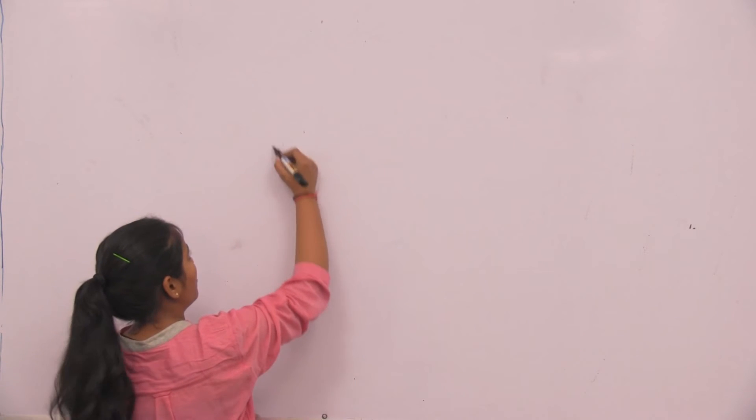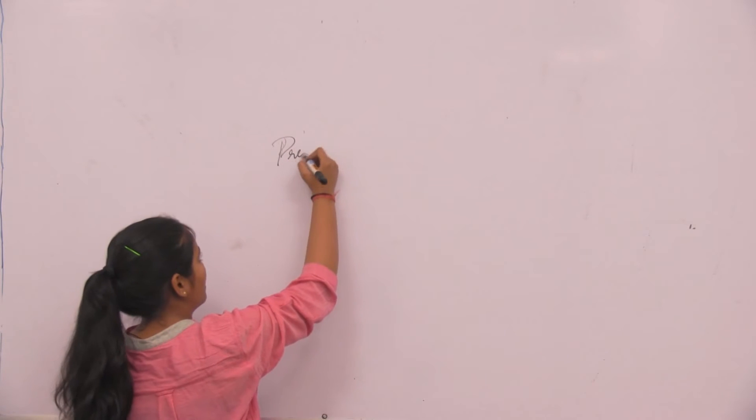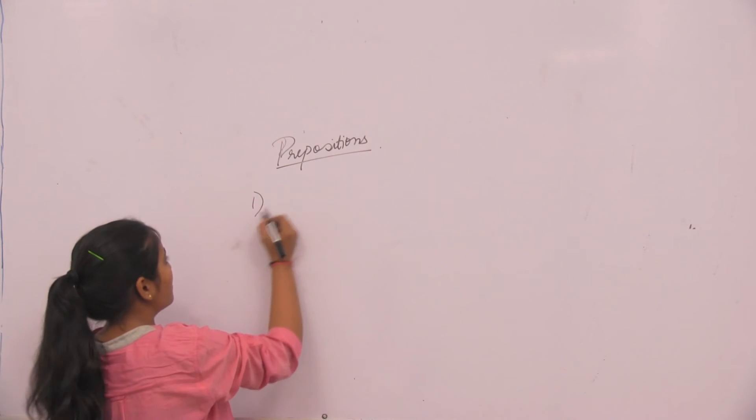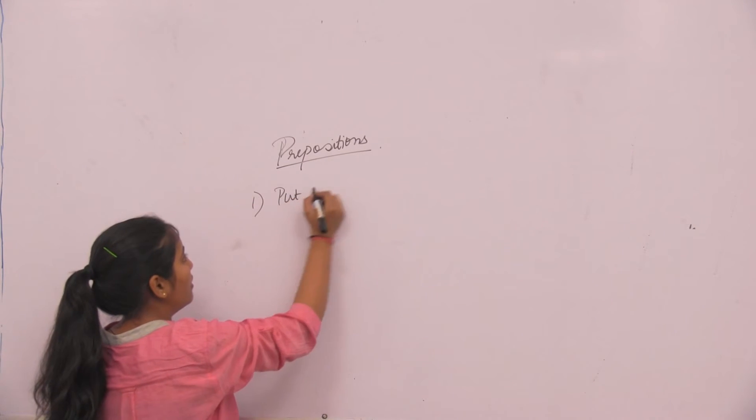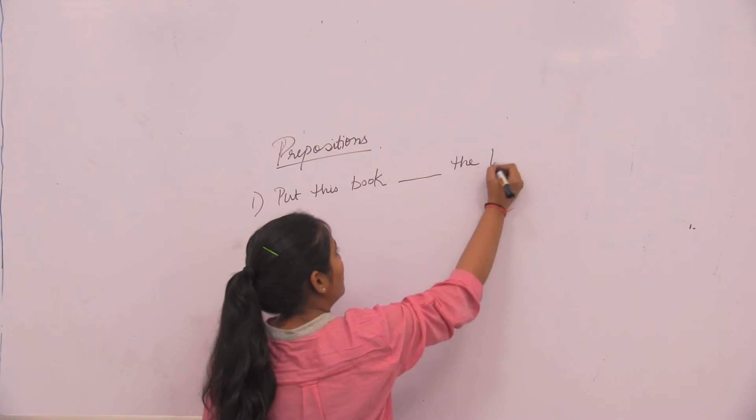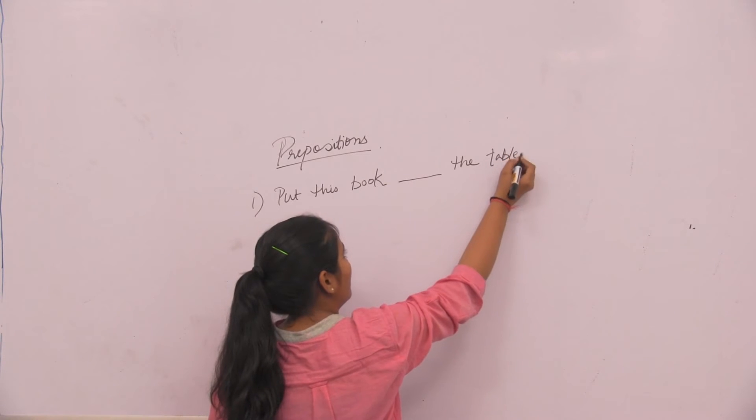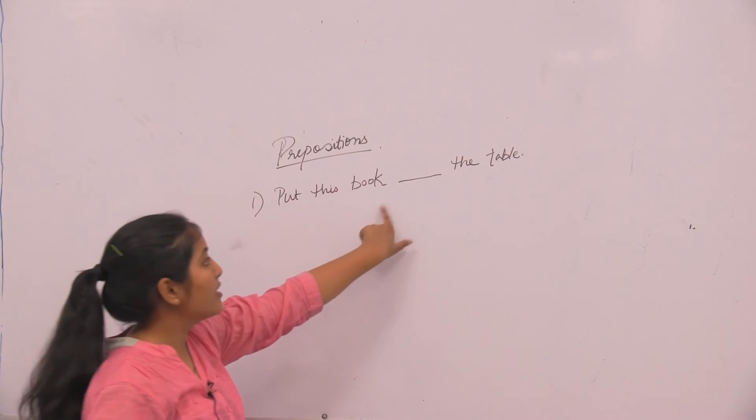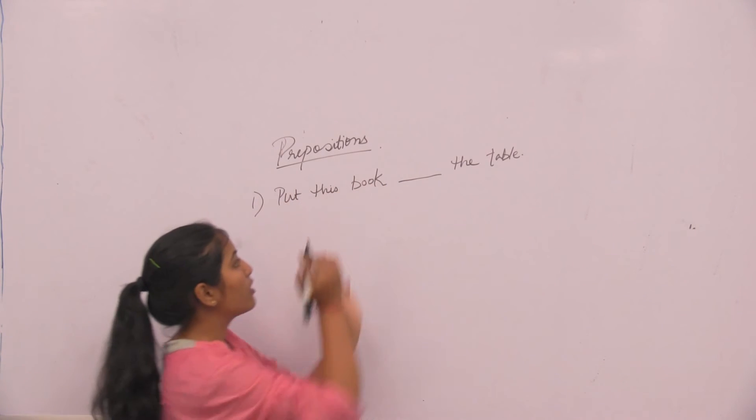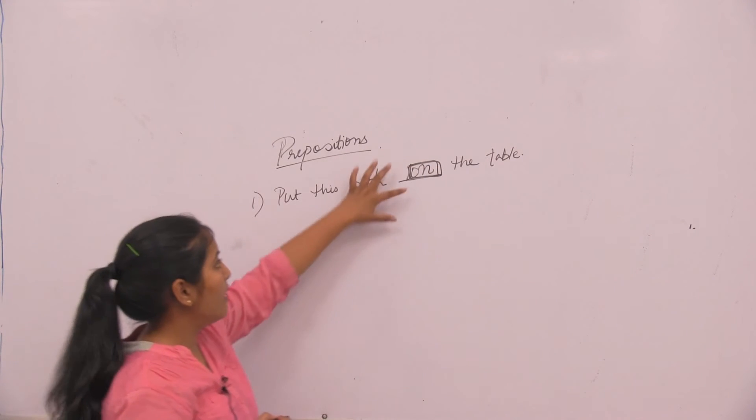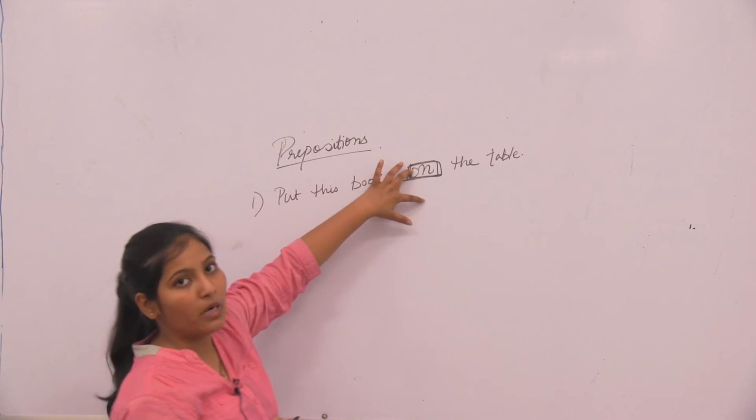Now we will do some more examples to understand this concept better. First we will do prepositions. Put this book dash the table. What should I put in the sentence to complete the sentence? Now put this book on the table. This on makes the complete sentence and hence the preposition is placed.